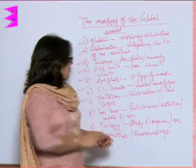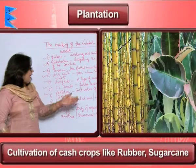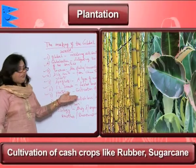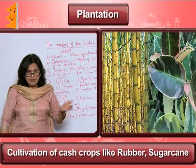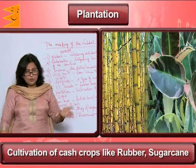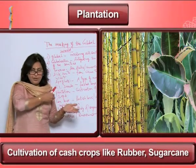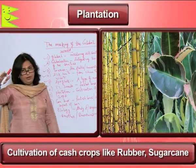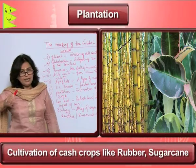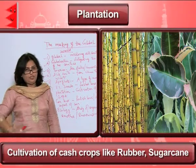Next is 'plantation.' The word plantation means cultivation of cash crops like rubber and sugarcane. When you are growing such crops in rows, the plants — that is called plantation.